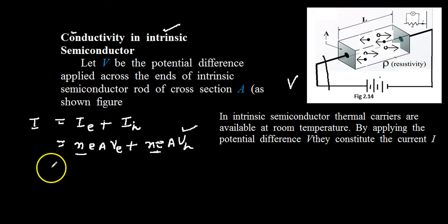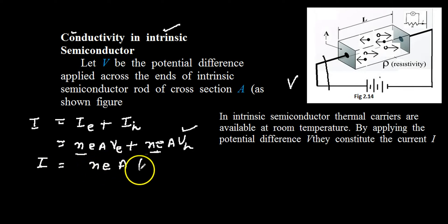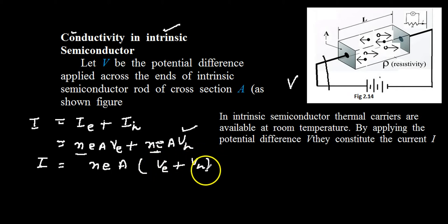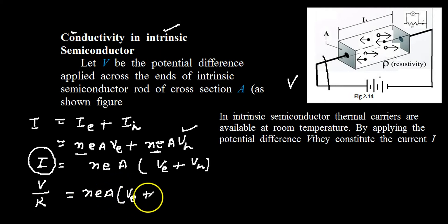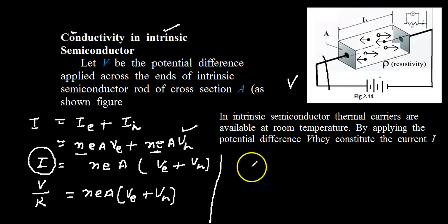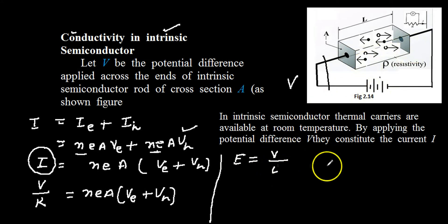Since the number densities are equal, N·E·A can be taken as common, giving the total current as N·E·A·(Ve + Vh). We also know the expression for the electric field: it is the potential difference applied across the specimen divided by the distance, so E = V/L, and therefore V = E·L.